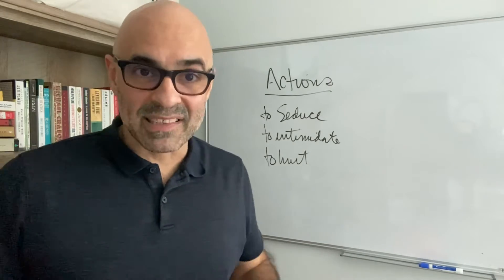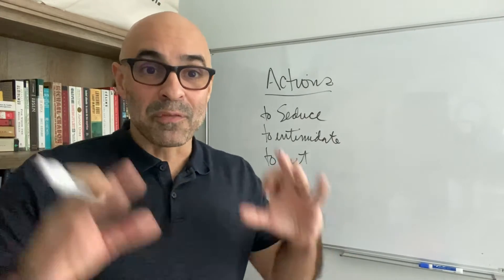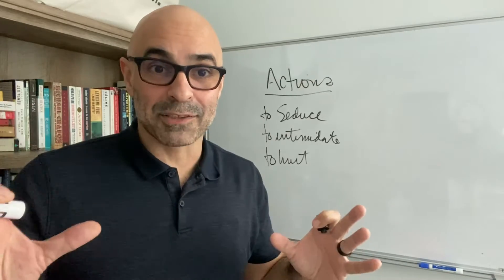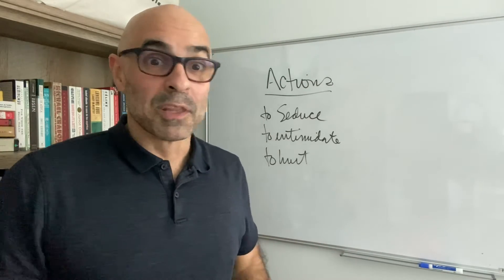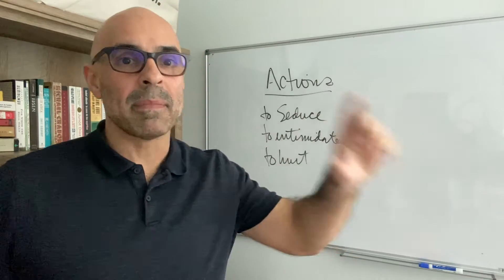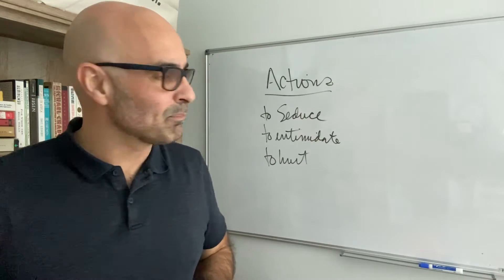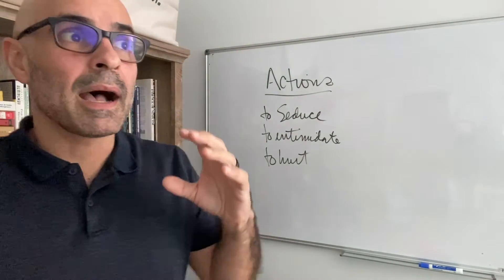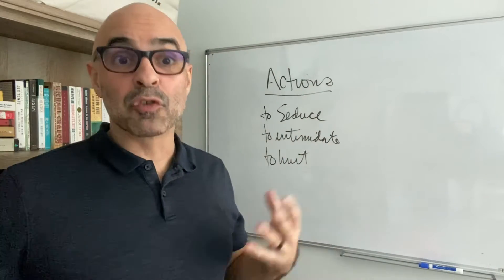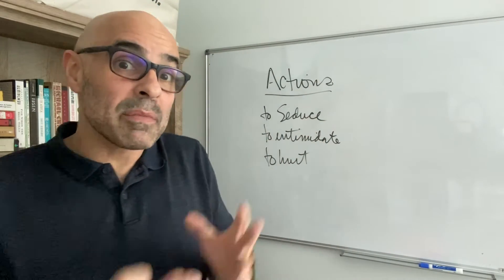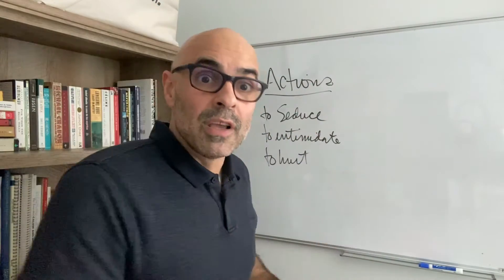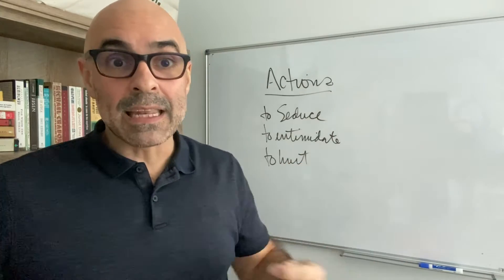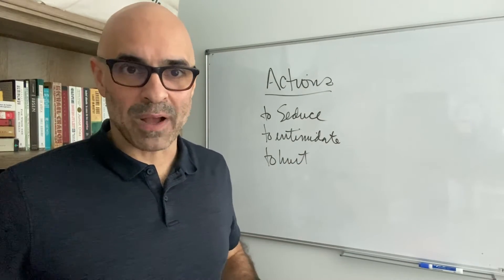If you want to see a good example of that, watch one of the face-offs of one of the Mike Tyson fights from the 80s. The moment Mike Tyson walks into that arena, he's playing the action to intimidate. It doesn't matter who's in front of him — he's going to intimidate them. So the action is the first element that we have to direct an actor. Instead of giving them a result, tell them what they can play.